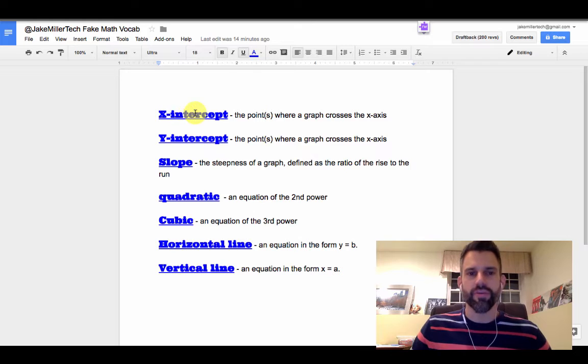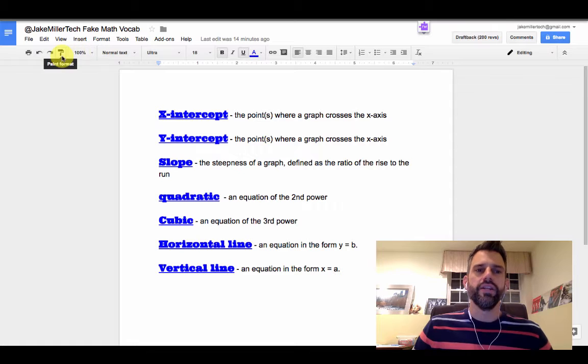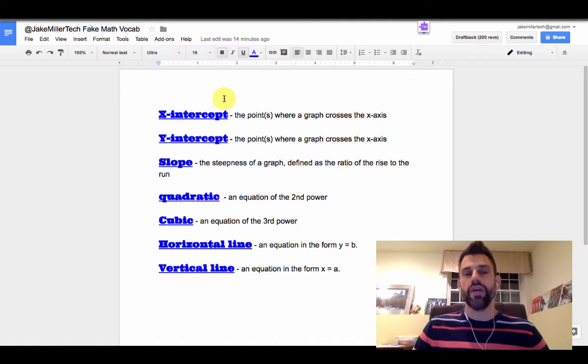So once I had one of these terms in this bold large blue underlined text, I could click on one and use the paint format tool to apply it to all the other ones.